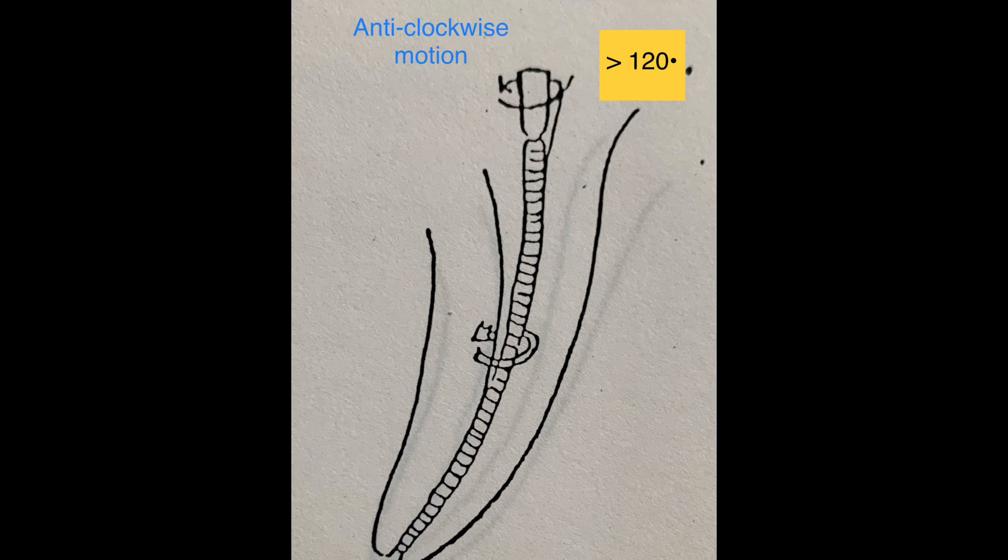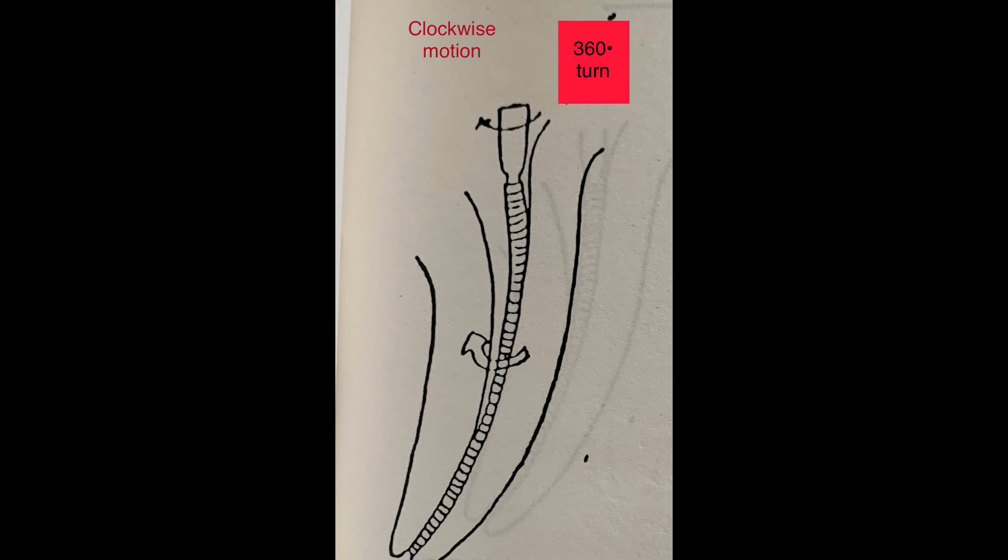This tends to unthread the instrument and make it move out, so to prevent that we have to apply gentle inward pressure. Now with this right and left oscillations we reach the working length. On reaching the working length, the instrument is rotated clockwise to one full rotation and it is pulled out.